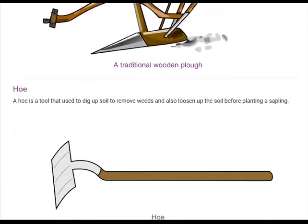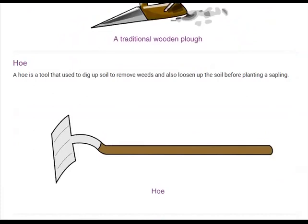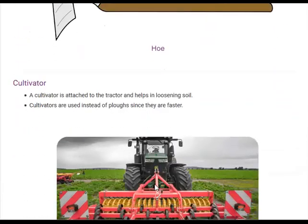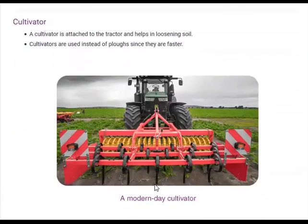The next agricultural implement is the hoe. A hoe is a tool used to dig up the soil, remove weeds, and loosen the soil before planting a sapling. It has a blade-like structure and a handle. Next is the cultivator, which is attached to a tractor and helps in loosening the soil — a process also called tilling or plowing. Cultivators are used instead of plows because they are much faster.